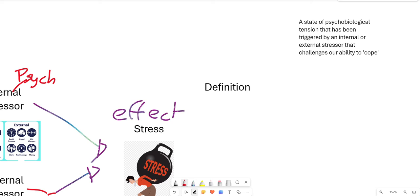Now, when defining stress, there are a few key descriptors that I want my students to include, particularly in relation to the VCE course. So it's a state of psycho-biological tension. So if we think about that dual relationship in terms of some of the physiological changes and the mental changes that go along with being exposed to stressors, triggered by either internal or external stressors, as we just went through, that's challenging our ability to cope.